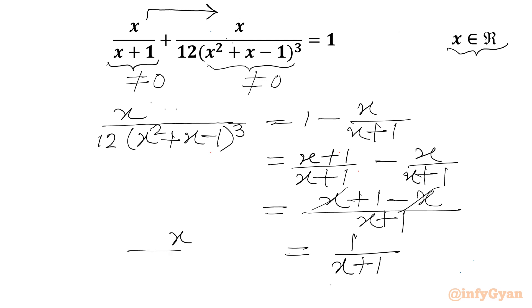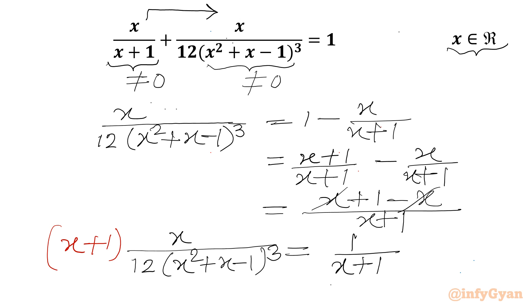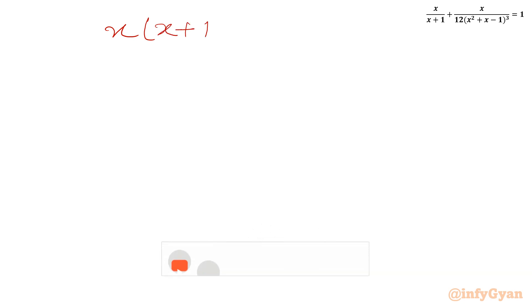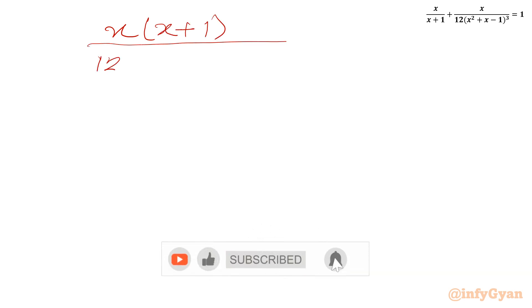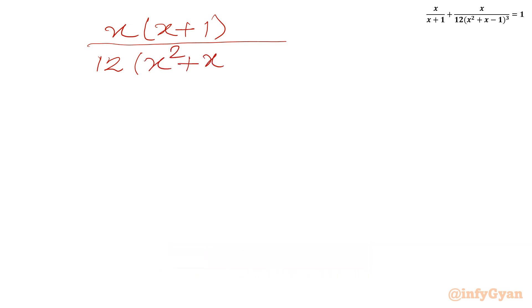So the LHS is x over 12 times (x squared plus x minus 1) cubed. Now I will multiply both sides by x plus 1 — since x is not equal to negative 1, we can cancel x plus 1. Our equation becomes x times (x plus 1) over 12 times (x squared plus x minus 1) cubed equal to 1.